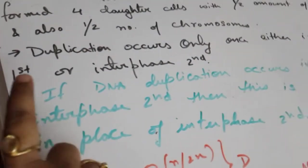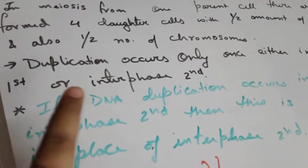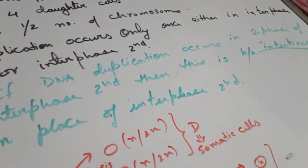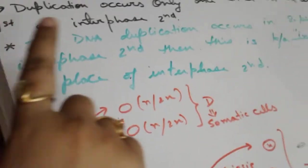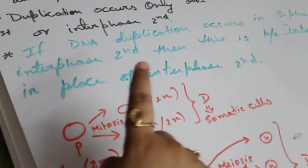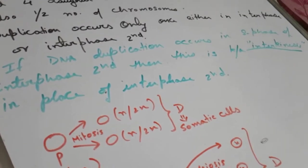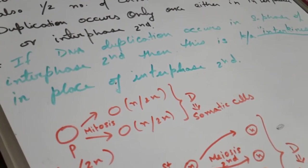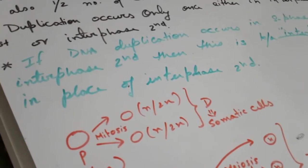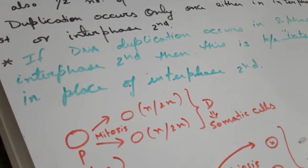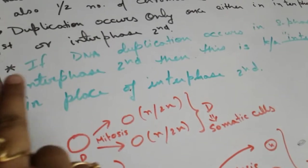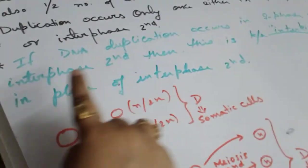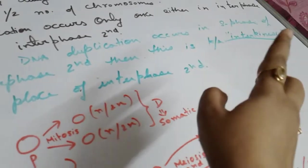Duplication occurs only once, either in interphase one or interphase two. If DNA duplication occurs in the S phase of interphase two, this is known as interkinesis instead of interphase two. This is an important terminology to remember, especially for MCQ questions where the term interkinesis may appear as one of the options.